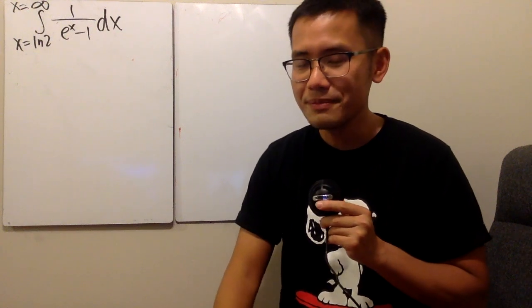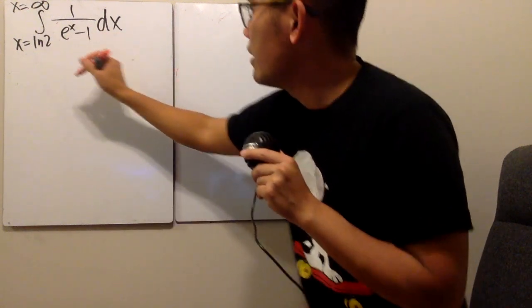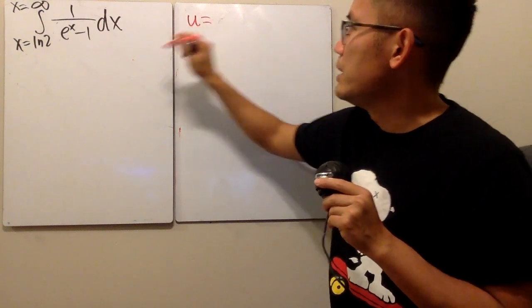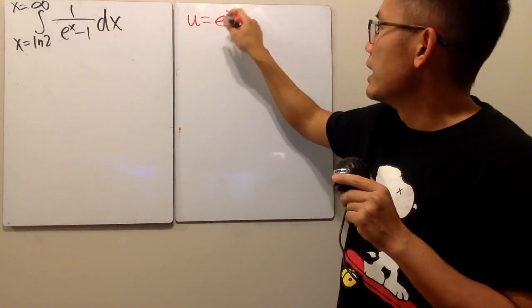So how can we do it? Use substitution? Good idea. Right here, let me just take the u to be the bottom, namely e to the x minus one.